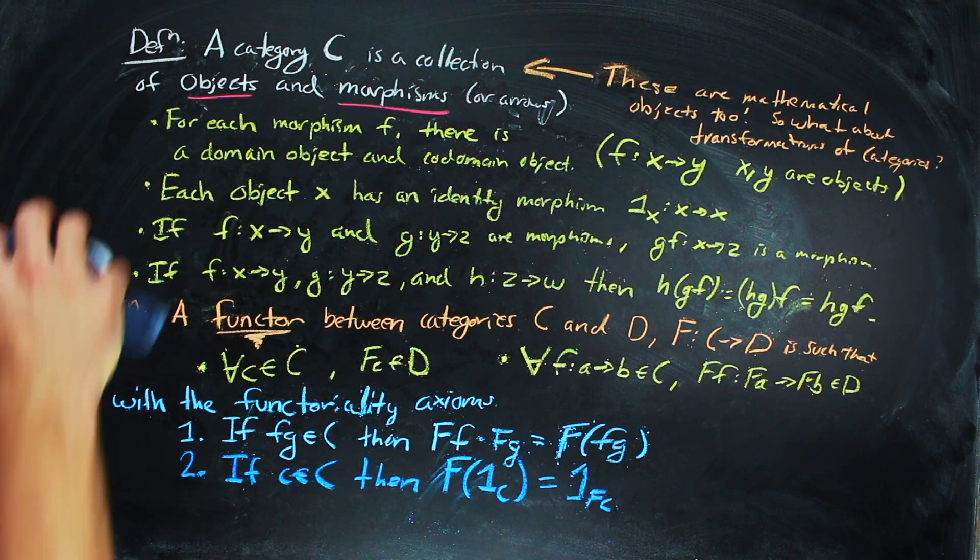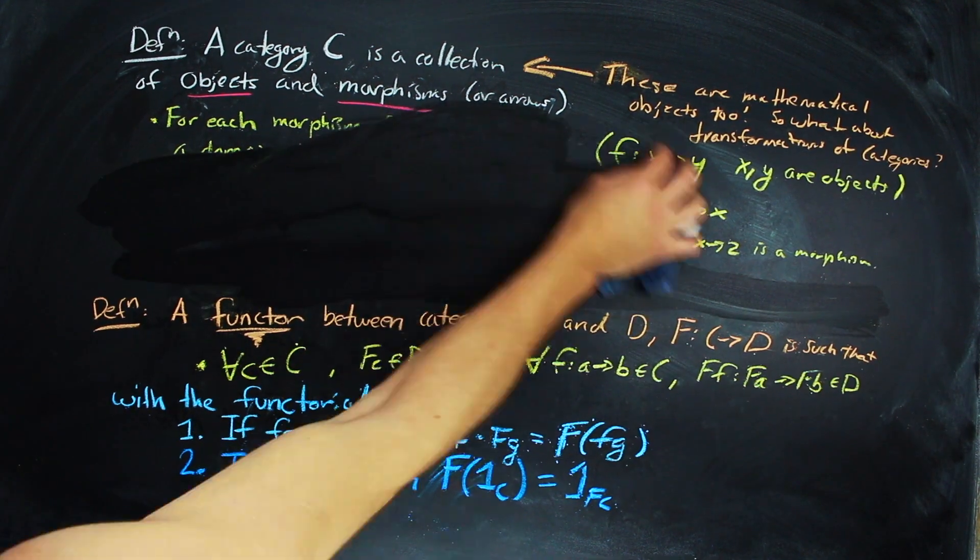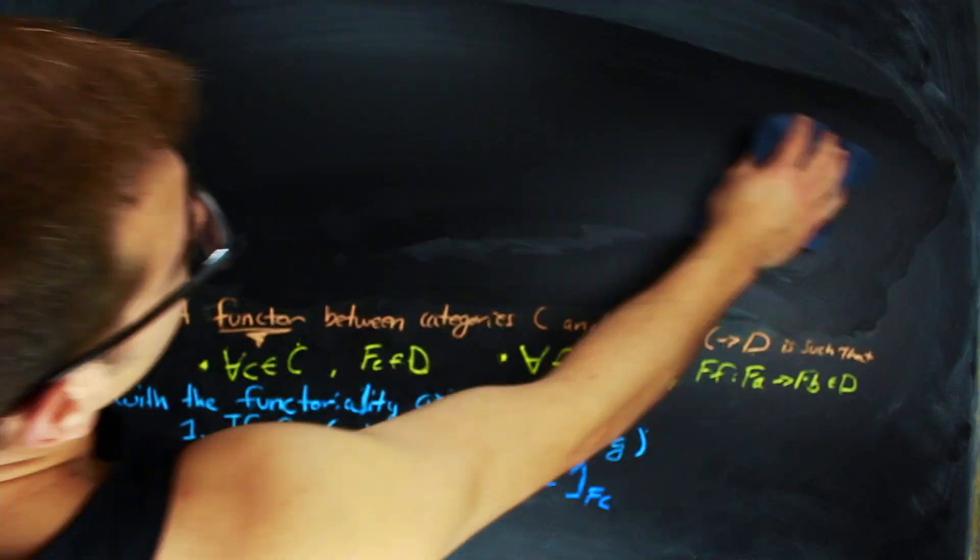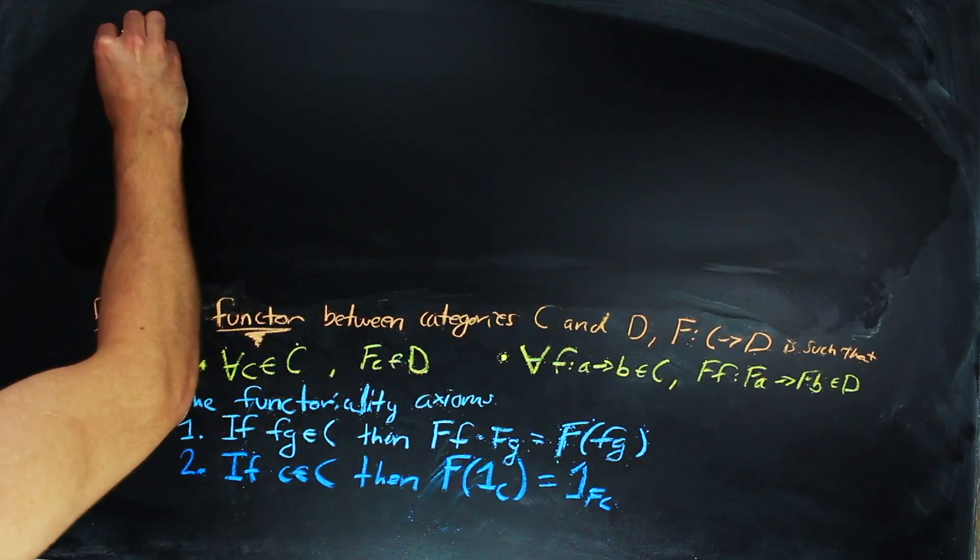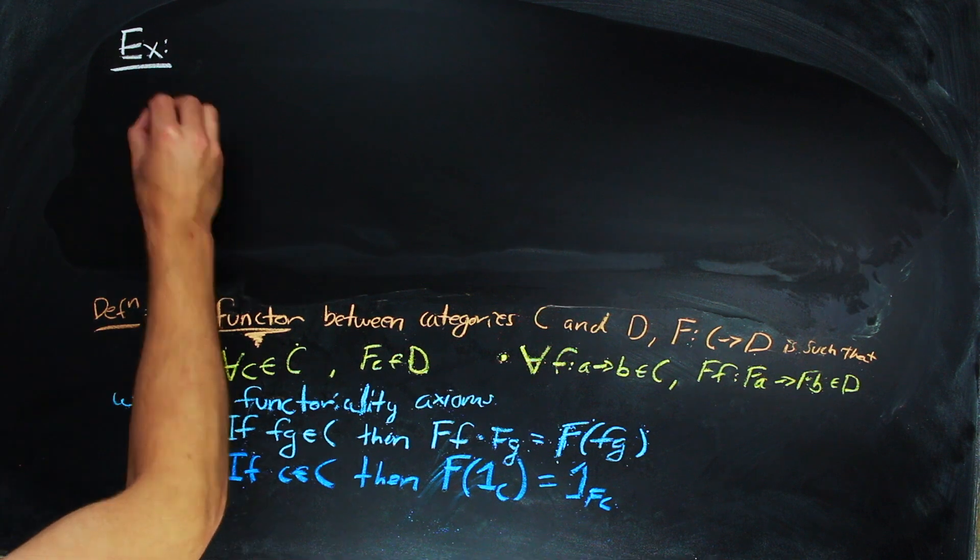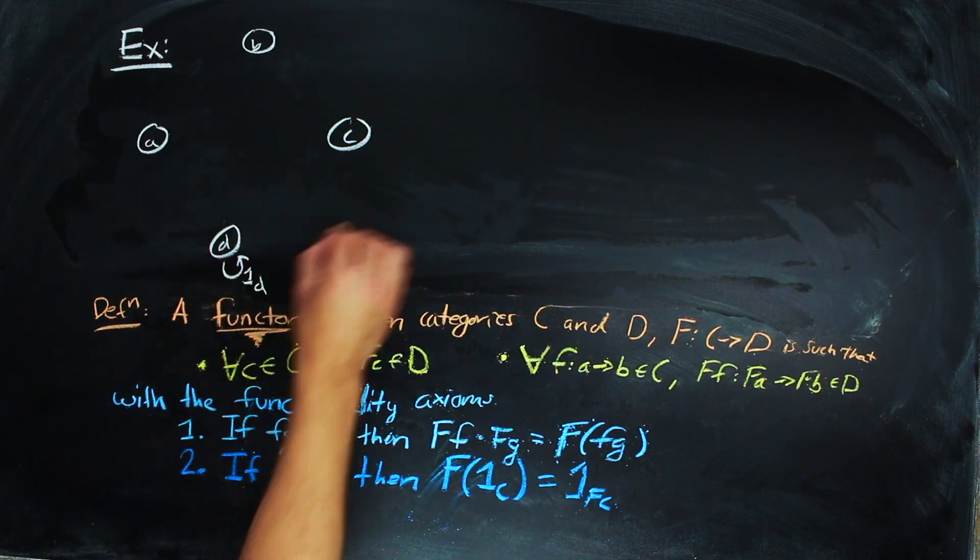So that was a lot, and categories are really hard to visualize. But thankfully, there are certain types of categories that are really small and you can write them all down on a piece of paper, and those are directed graphs.